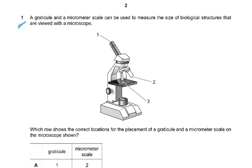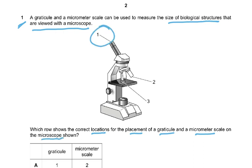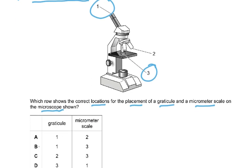Question 1: A graticule and a micrometer scale can be used to measure the size of biological structures viewed with a microscope. Which row shows the correct locations for the placement of a graticule and a micrometer scale on the microscope shown? The graticule is placed on 1 and the micrometer scale is placed on 3, so the answer is B.